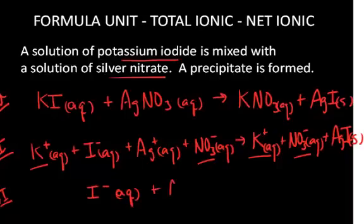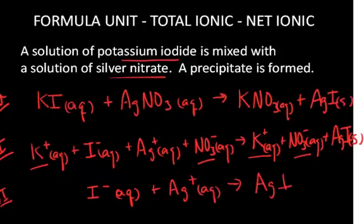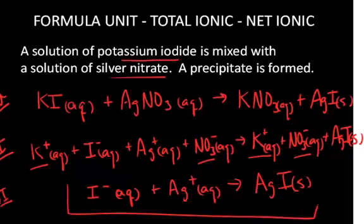And the silver ion that were aqueous on the left-hand side are now existing as a solid precipitate when they come together on the right-hand side. So this is the net ionic equation in this case for a precipitation reaction.